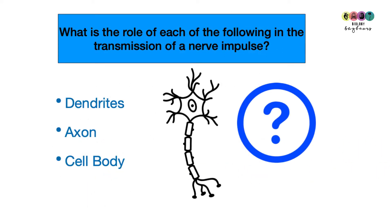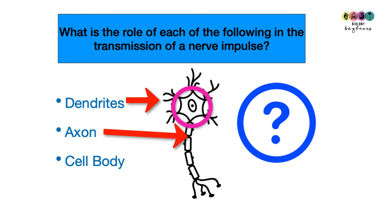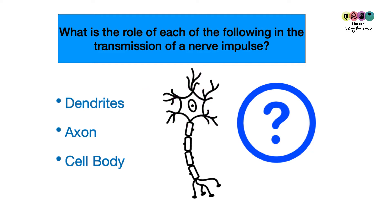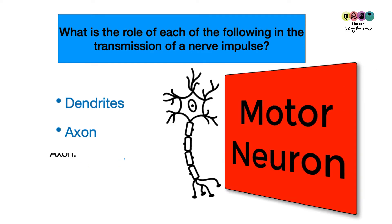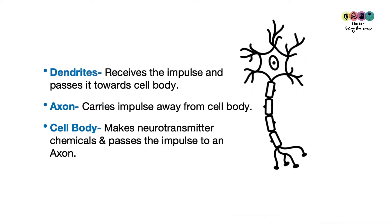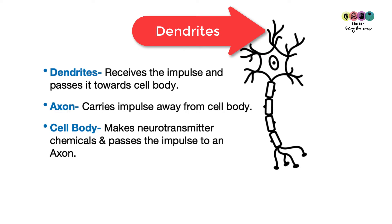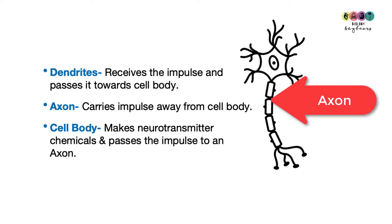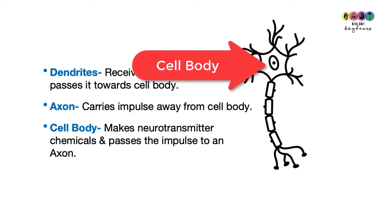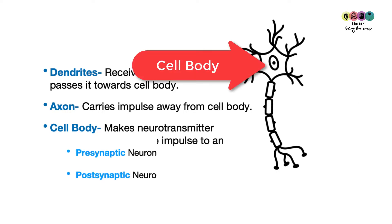First question: what is the role of each of the following in the transmission of a nerve impulse? Dendrites, axons and cell body. The dendrites receive the impulse and pass it towards the cell body. The axon receives the impulse from the cell body, and the cell body makes the neurotransmitter chemicals and passes the impulse to an axon.